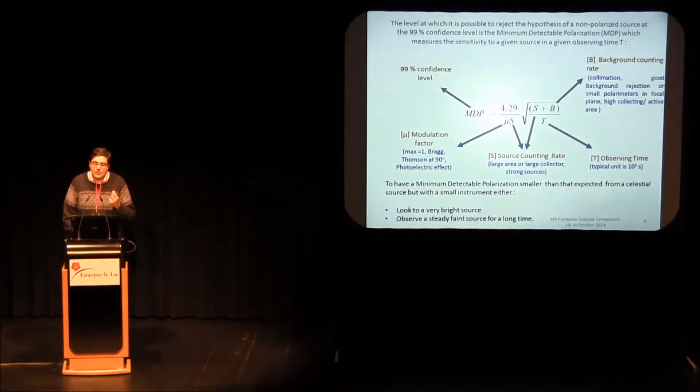The key parameter to understand the sensitivity of the polarimeter is the minimum detectable polarization. As much as low is the minimum detectable polarization, the more sensitive is the polarimeter. It depends linearly on the modulation factor and from the source counting rate and the observing time. So it means that in order to have very good sensitivity, very small minimal detectable polarization, we have to look to bright sources or to integrate for a long time with faint sources.